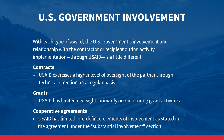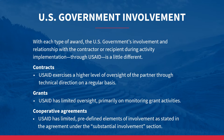With each type of award, the U.S. government's involvement and relationship with the contractor or recipient during activity implementation is a little different. With contracts, USAID exercises a higher level of oversight through technical direction on a regular basis. With grants, USAID has limited oversight, focused primarily on monitoring grant activities. With cooperative agreements, USAID has limited predefined elements of involvement as stated in the agreement under the Substantial Involvement section. It is important to read the solicitation or your contract or agreement to understand your responsibilities and the role USAID will play.